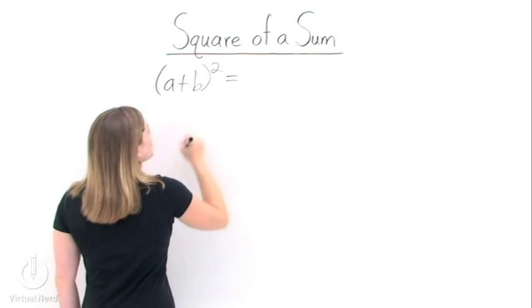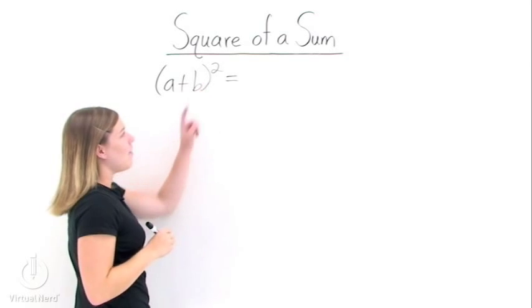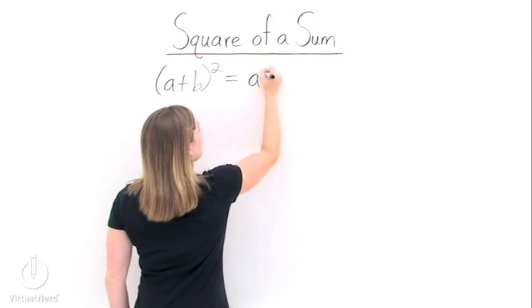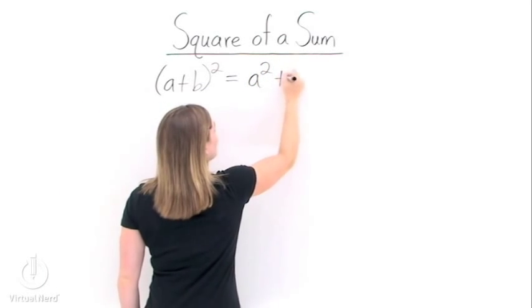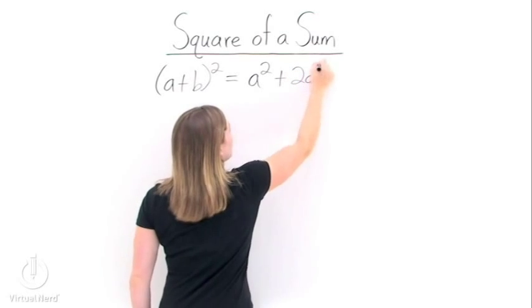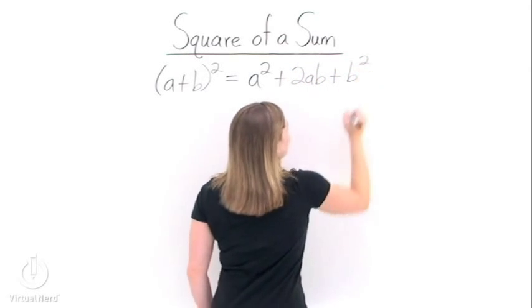So say we take two numbers, a and b, and add them together, and then square that quantity. The formula for square of a sum says that this is equal to a squared plus 2ab plus b squared.